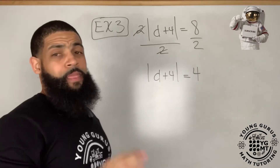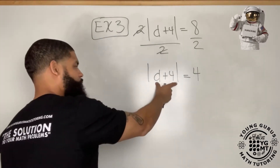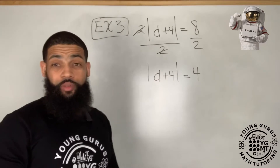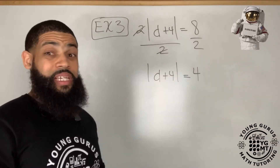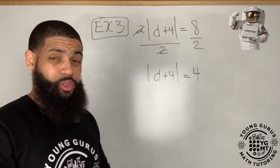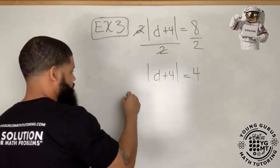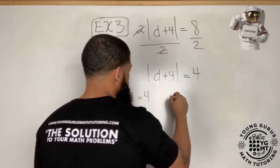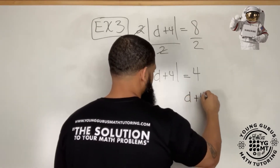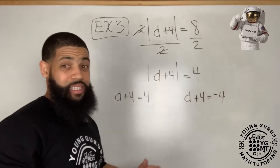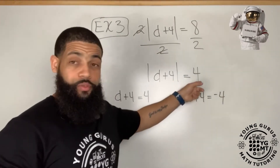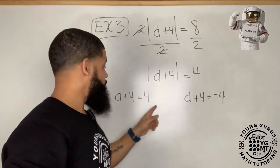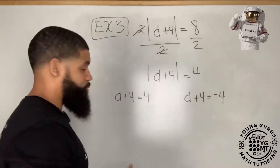Now watch, this is where it gets tricky. Because the absolute value of d plus four equals four, what's inside the absolute value symbol can equal negative four or positive four. So we need to break this into two equations: d plus four equals four, and d plus four equals negative four — because the absolute value of negative four is four, and the absolute value of four is four.